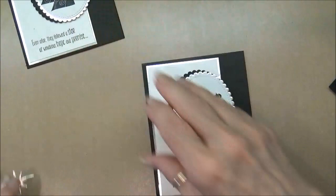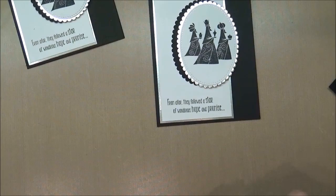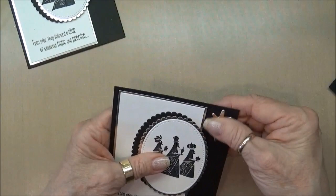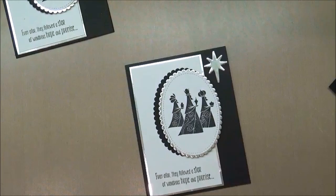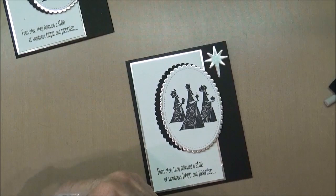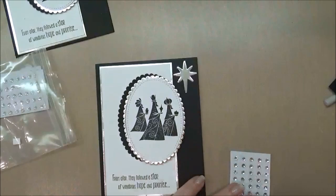All right, then we'll take our star and put our adhesive on the back of the star, put that on, and then I'm going to use one of our rhinestones. You can see I've just cut mine all apart as I finish up a group I just cut the little pieces off and put them all in this little baggie.